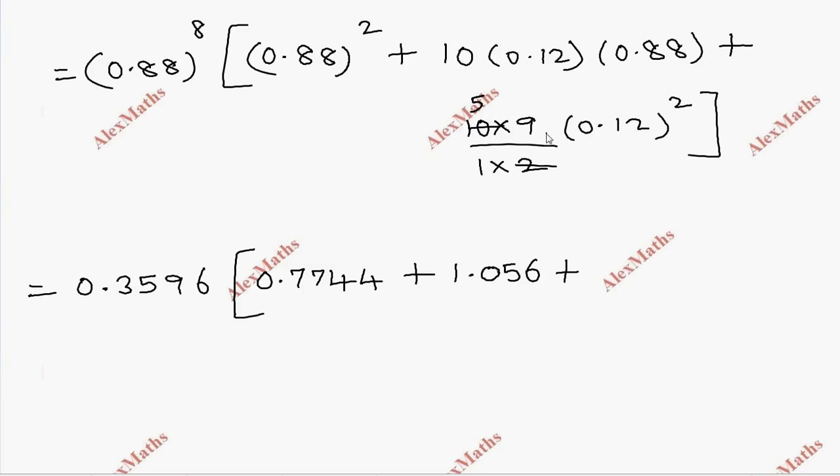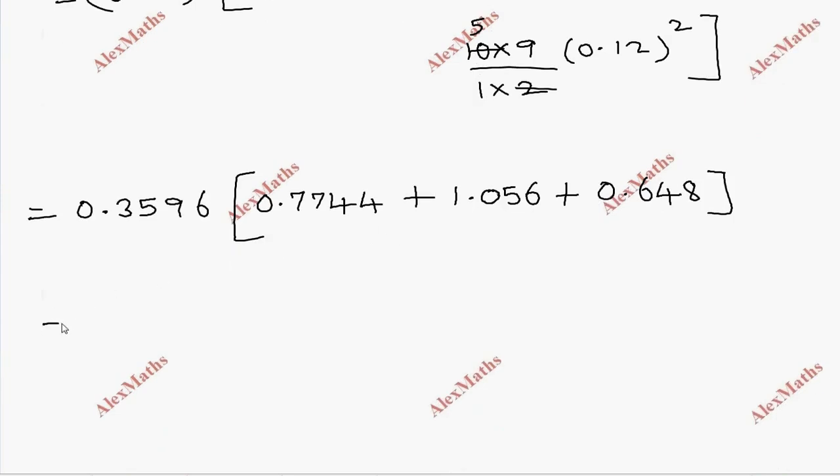If you cancel this, you will have 0.88 whole power 10. The value of the bracket is 2.4784. If you multiply it, you will get round off 0.8912.